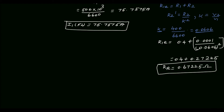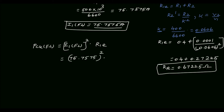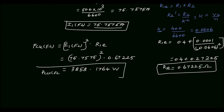We have found the full load primary current I1 and R1E. Now we calculate the full load copper loss: P_copper equals I1² × R1E, which is 75.7575² × 0.67225. Multiplying these gives 3858.1764 watt. So the full load copper loss is 3858.1764 watt.